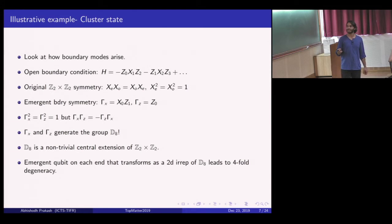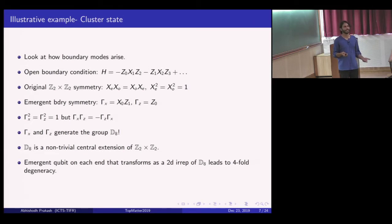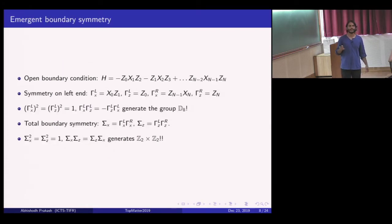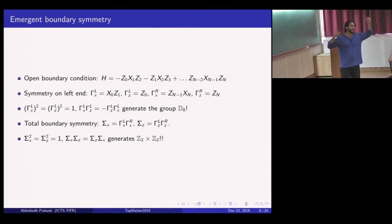D8 is a very specific non-trivial so-called central extension of Z2 × Z2. The emergent qubit on each end, which gives the boundary degeneracy, is a non-trivial two-dimensional irreducible representation of D8, and this precisely leads to the fourfold degeneracy. Interestingly, if I consider both ends together—the total boundary symmetry combining left and right—this turns out to generate the original Z2 × Z2 again, not D8. So interesting non-trivial symmetries appear at each end individually, but together you recover the original symmetry. Once again, this is not a coincidence—it's precisely to do with the phase of matter and the global symmetry being considered.